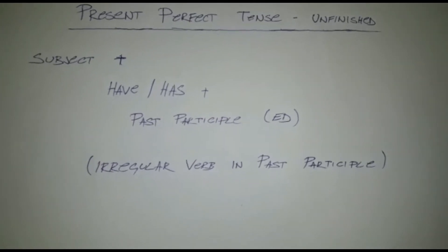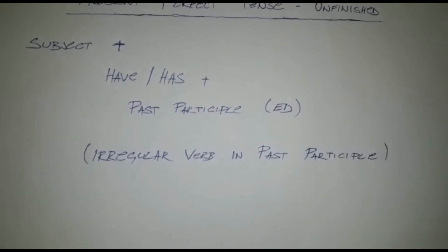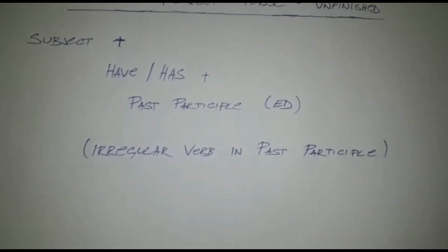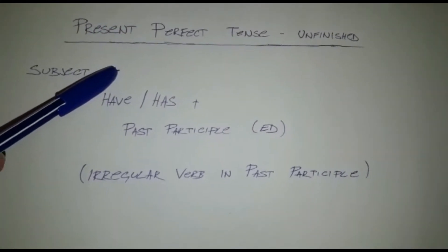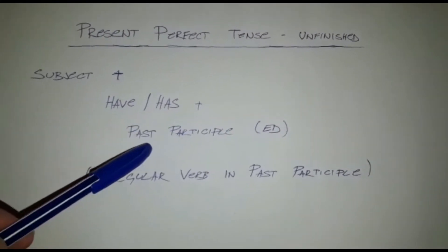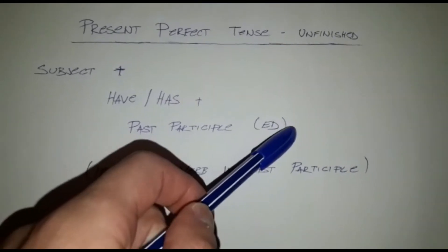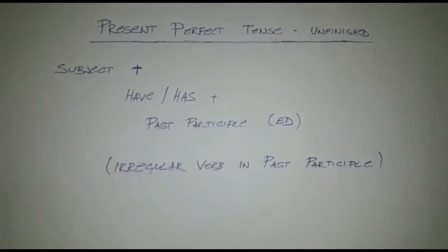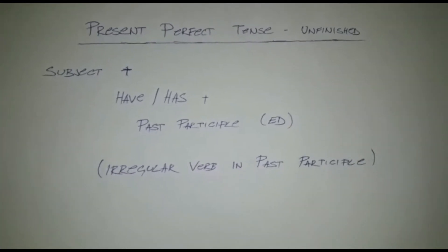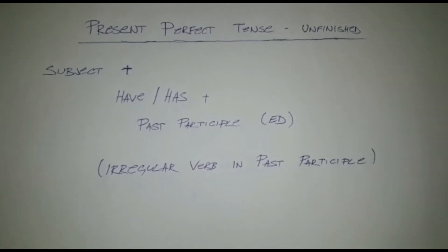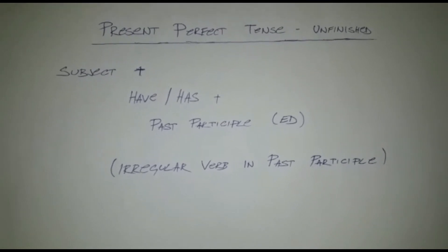The first thing we need to know about present perfect tense is that it starts with a form or structure that's subject plus have/has plus past participle, which typically ends in -ed. For example, walk plus -ed becomes walked: I have walked to the store, or he has walked to the store.